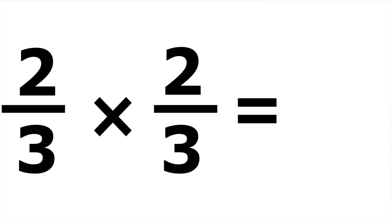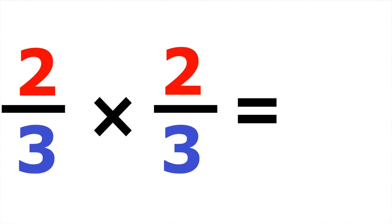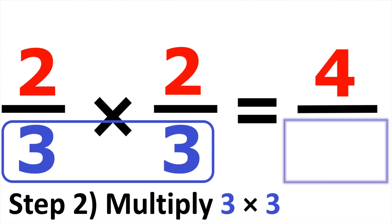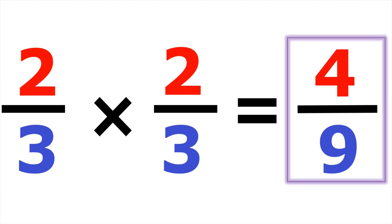On to our second example. We have two-thirds times two-thirds. Again, we indicate the numerators in red and the denominators in blue. First we start with two times two. We multiply the two from the first numerator and the two from the second numerator, and two times two gives us four. Now the denominators — they're both three, so three times three gives us nine. The answer is four over nine.